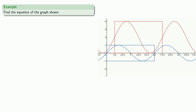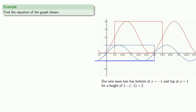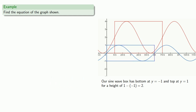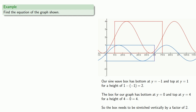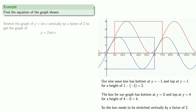Our sine wave box has bottom at y equals negative 1 and top at y equals 1, for a height of 1 minus negative 1, or 2. The box for our graph has bottom at y equals 0 and top at y equals 4, for a height of 4 minus 0, or 4. So our box needs to be stretched vertically by a factor of 2, meaning the first thing we need to do is stretch y equals sine of x vertically by a factor of 2.